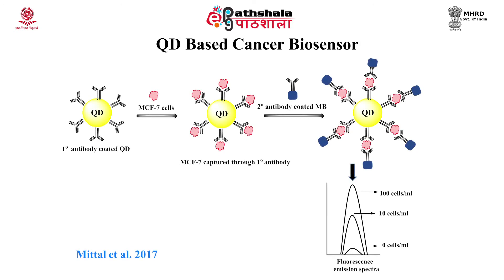Quantum dots are generally used in place of fluorescent dyes because they include better stability, stronger fluorescence intensity, and different colors can be adjusted by controlling the size of the dot. Here is an example of a quantum dot based cancer biosensor. The quantum dot has been labeled with primary antibodies against the target cancer cell, MCF-7 cells. In the presence of target cells, a complex is formed between the quantum dots, primary antibodies and the cancer cells, which is then subjected to secondary antibody-coated magnetic nanoparticles. The whole complex can be easily separated using a magnet, and a high number of cancer cells can be detected by an increase in fluorescence — higher the number of cells, more will be the fluorescence observed.